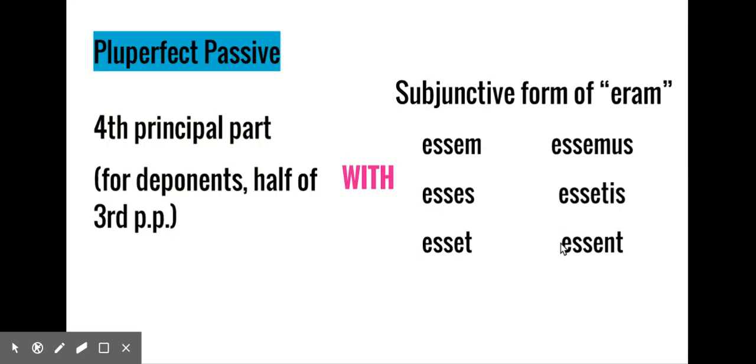Pluperfect passive subjunctive is a bit of a different element. You start with the fourth principal part, which is exactly how we started creating the pluperfect passive indicative back when we learned it in November. If we're starting at the same place with the fourth principal part, we are still working, essentially, on having to differentiate between the indicative and the subjunctive. So the way in which we're going to differentiate our pluperfect passive forms is in the helper verb, the auxiliary verb.